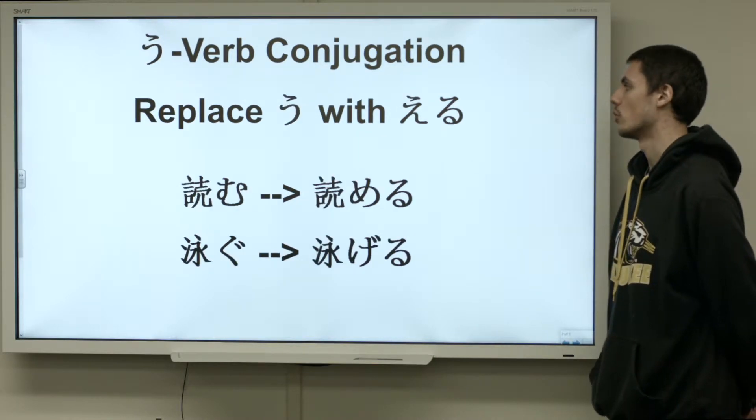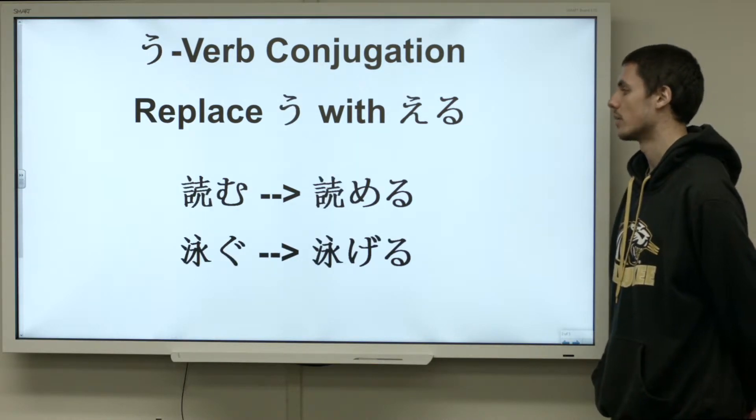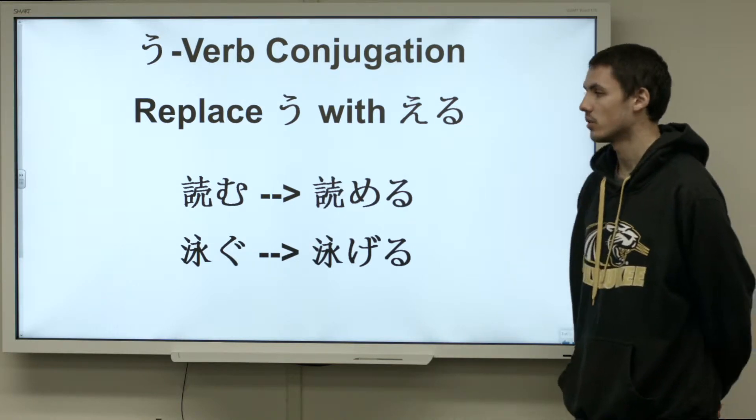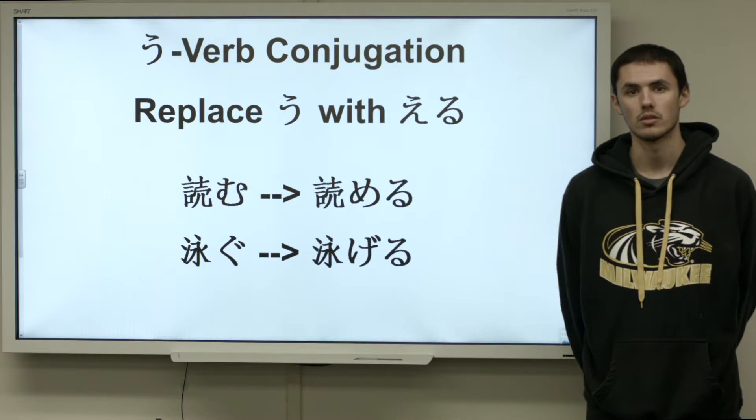With u verbs, you replace the u with eru. Yomu becomes yomeru, to be able to read. Oyogu becomes oyogeru, to be able to swim, so on and so forth.